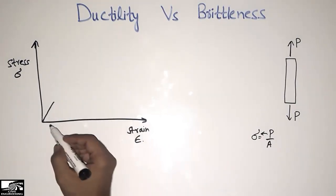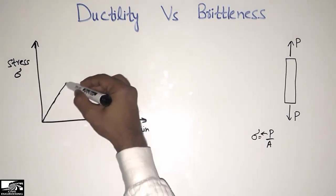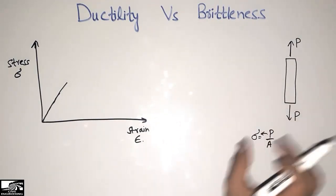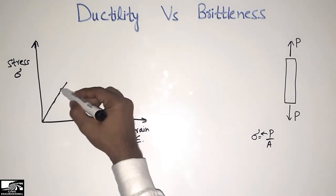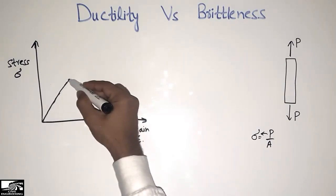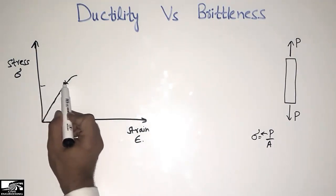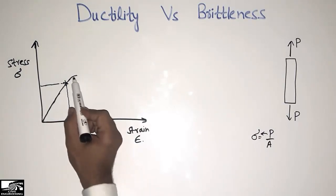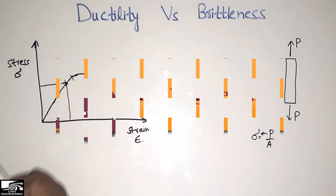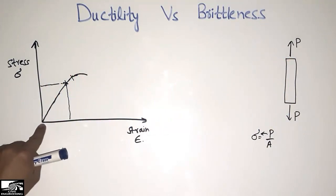As stress increases, strain also increases in the material. It will follow Hooke's law up to this point. Now, when this is a brittle material, after reaching the elastic limit it will follow the yield limit. Up to this point it follows the elastic limit, then it follows the yield limit after crossing it.